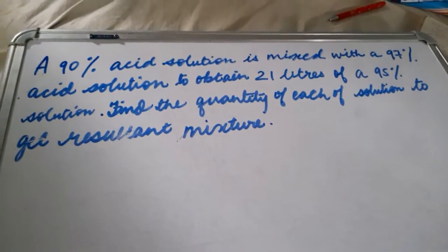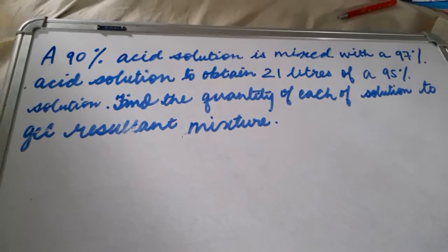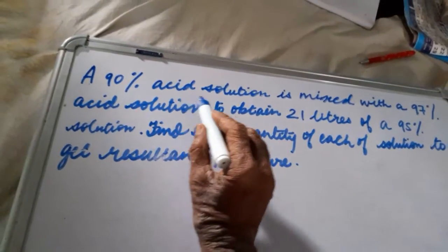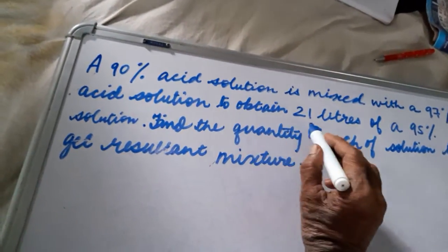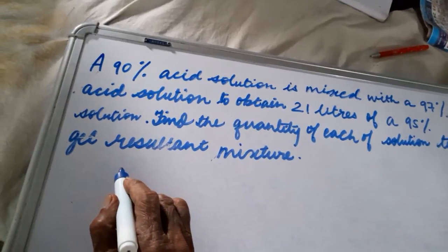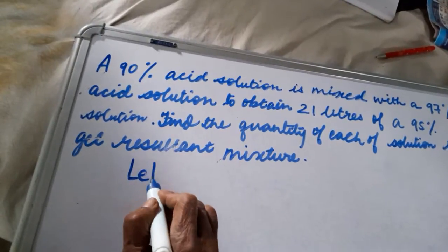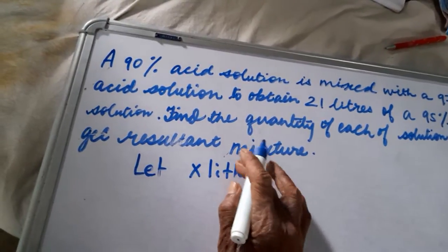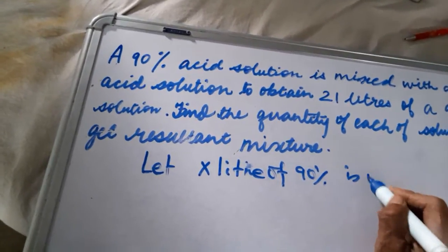Welcome guys. This is a question from Standard 9 of the ICSE board on simultaneous equations. A 90% acid solution is mixed with a 97% acid solution to obtain 21 liters of a 95% solution. To solve, we assume: let x liters of 90% solution is mixed.